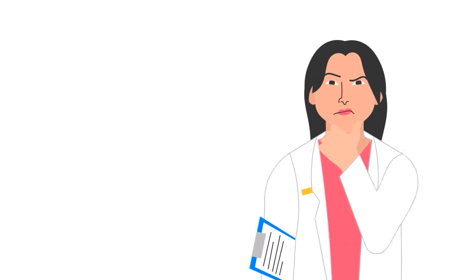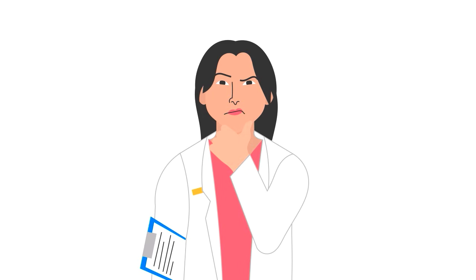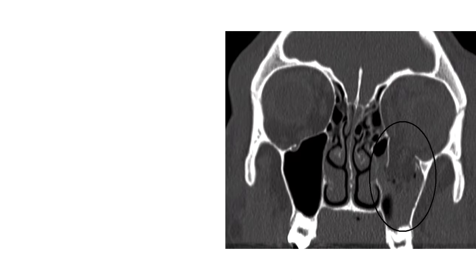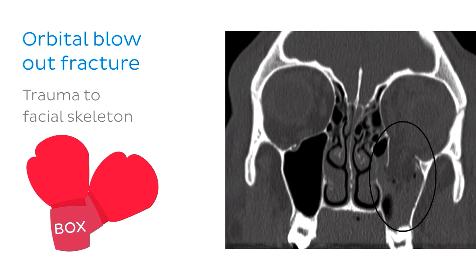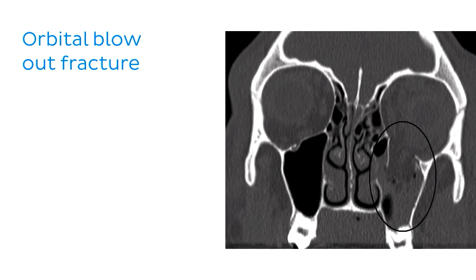Since we've been speaking about the bones of the orbit, our clinical correlation today is related to a bony orbit fracture, specifically known as an orbital blowout fracture. This is the most common type of orbital fracture and is most often incurred as a result of trauma to the facial skeleton — a clue as to why it is most prevalent amongst young men. Most often, an orbital blowout fracture is seen in the inferior or medial walls of the orbit.